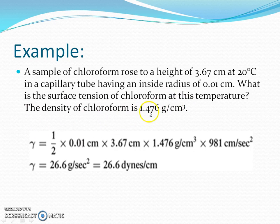The density of chloroform is 1.476 g/cm³ and the radius r equals 0.01 cm. We put the values: γ equals one half times 0.01 cm times 3.67 cm times 1.476 g/cm³ times 981 cm/s². The surface tension of chloroform is 26.6 dynes/cm.